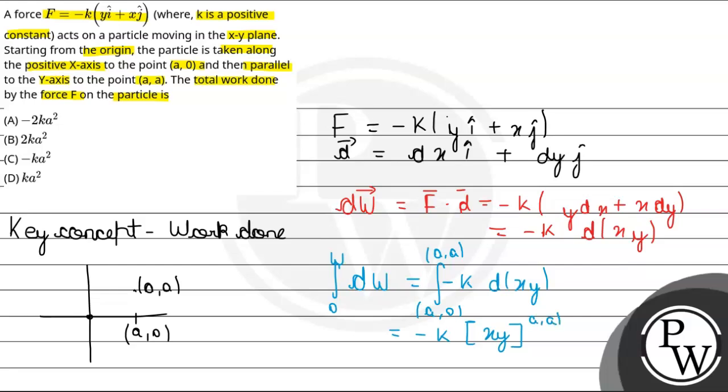(a, a) se (a, 0) to isko agar further hum solve kar rahe hain, to hamare paas answer aayega, minus of k into a square.